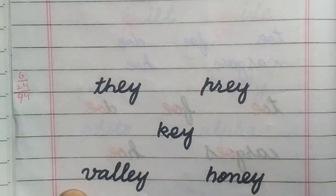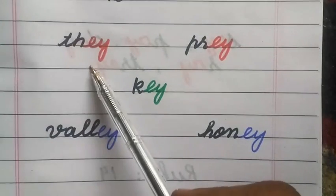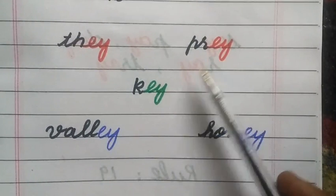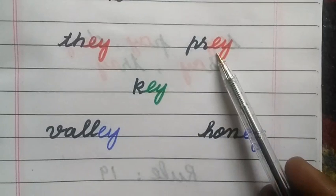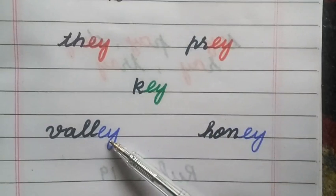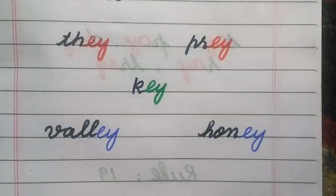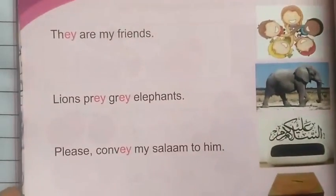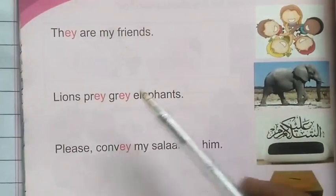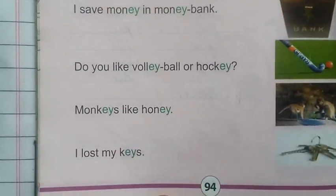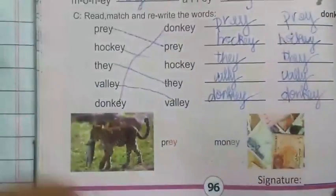Students, now I have written five more words for you. You will guess what is common in these five words. The common element is E-Y. The words are: they, pray, key, valley, honey. This phonogram has three sounds — A, E, E — and these have been taught to you in your Iqra 2 on pages 94, 95, and 96.